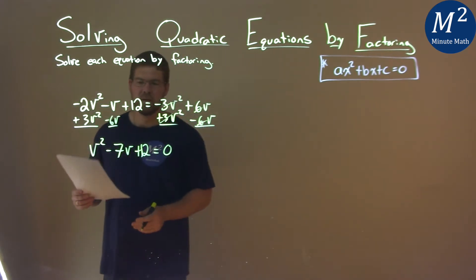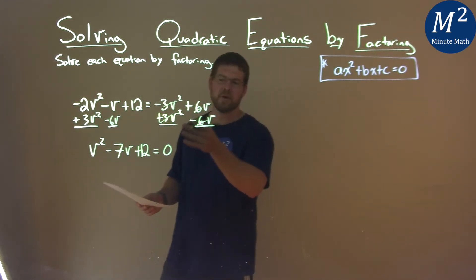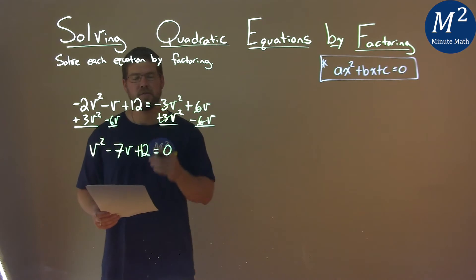So this is pretty easy. We now have v² - 7v + 12 = 0.